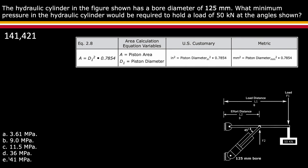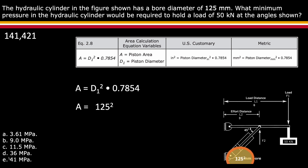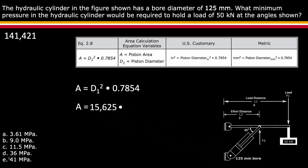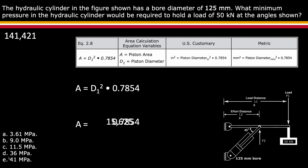Next, determine the cylinder area using equation 2.8. The question provides the bore diameter of 125 millimeters. Plugging that into the equation: 125 millimeters squared equals 15,625, times the constant 0.7854, giving an area of 12,272 square millimeters.